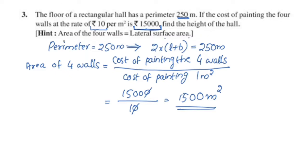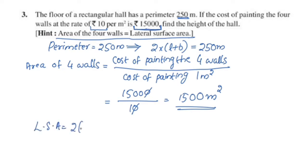Here is a hint: the area of the four walls is the lateral surface area. LSA equals 2 into (L plus B) into H.